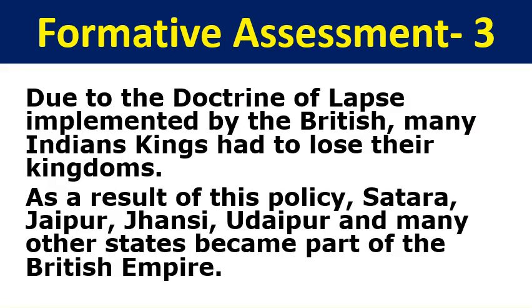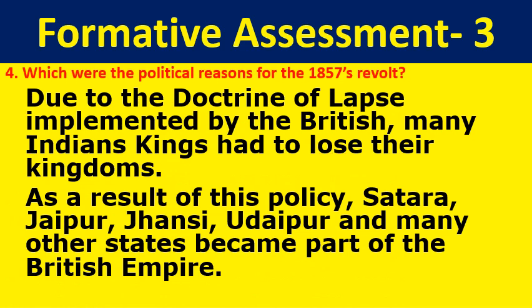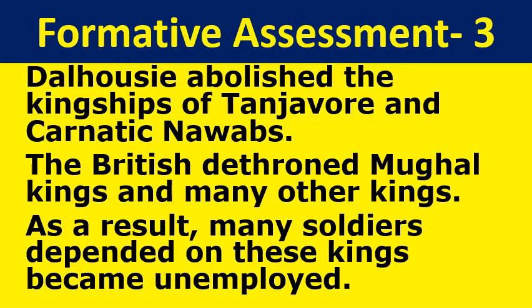Which were the political reasons for the 1857 revolt? Due to the Doctrine of Lapse implemented by the British, many Indian kings lost their kingdoms. As a result, Satara, Jaipur, Jhansi, Udaipur and many other states became part of the British Empire. Dalhousie abolished the kingship of Tanjore and Carnatic Nawabs. The British dethroned Mughal kings and many other kings. As a result, many soldiers who depended on these kings became unemployed. All these are the political reasons for the 1857 revolt.